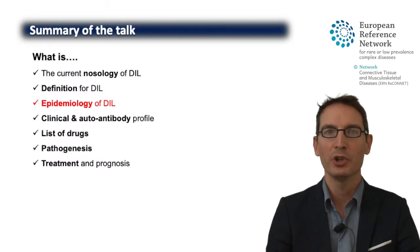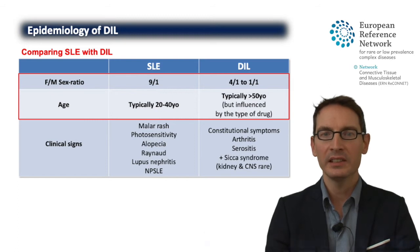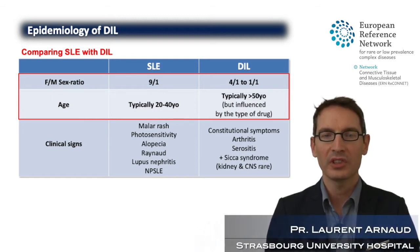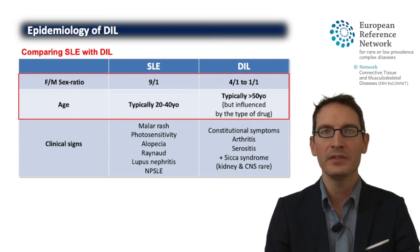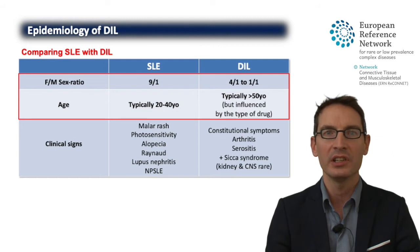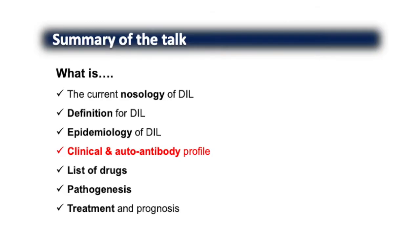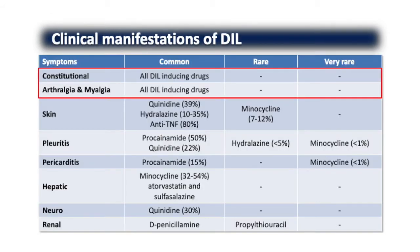Regarding the epidemiology of DEAL: in SLE there is a strong female predominance and patients are usually aged 20 to 40 years. In DEAL, there is still a female predominance but it is less clear, and the age of onset of manifestations is influenced by the type of drug being used. Virtually all cases share constitutional manifestations such as malaise, fatigue, and fever, along with very common arthralgia, sometimes rarely arthritis, and myalgia.